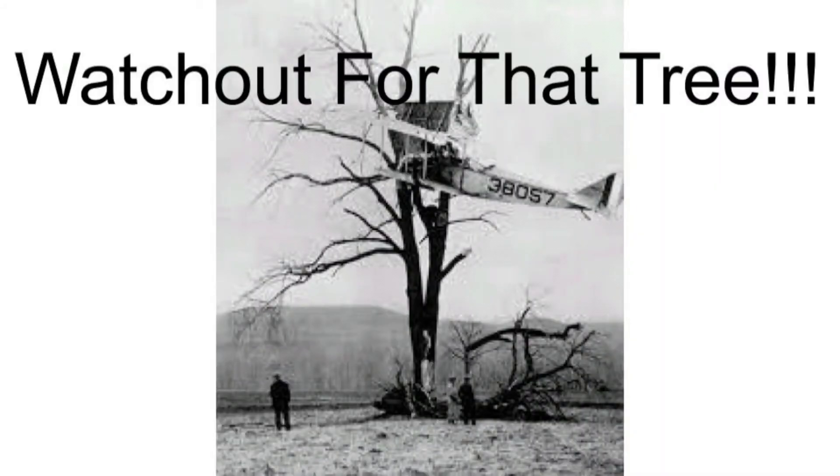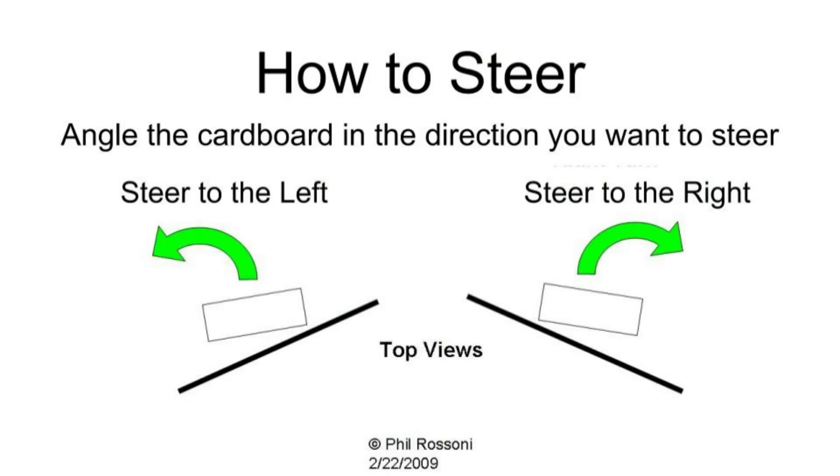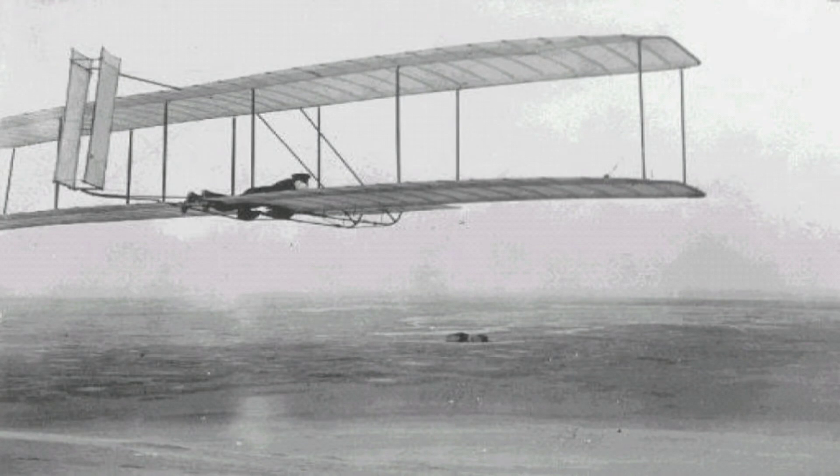Now that we're flying, how do we steer the paper airplane so we can fly around that tree? To steer the paper airplane in flight, angle the cardboard in the direction you want to steer. Angle the cardboard to the left to steer to the left and to the right to steer to the right. An airplane that can be steered was probably the Wright brothers' greatest contribution.